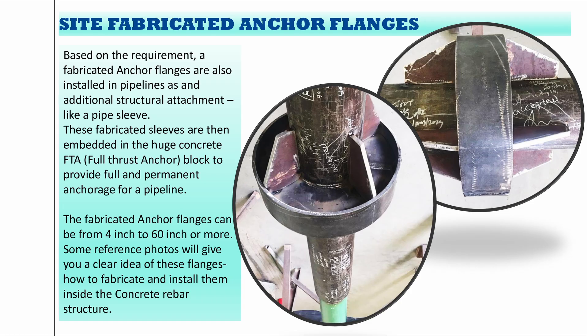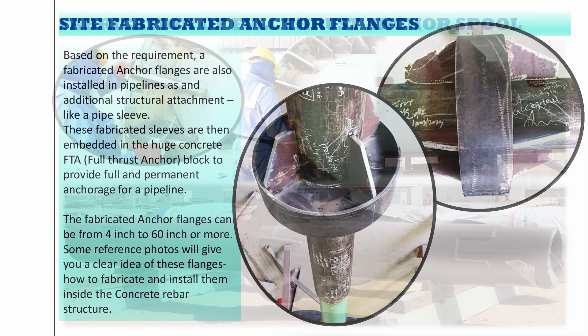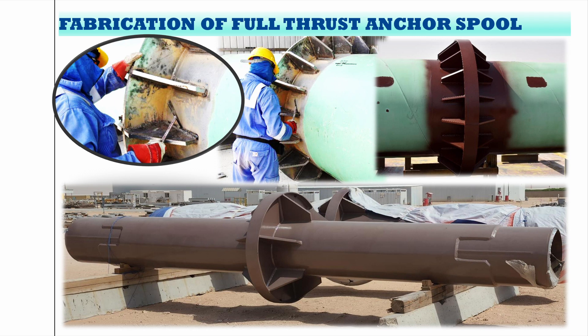In Gulf oil and gas projects, fabricated anchor flanges are generally used — you can see the photo on the right. Based on requirements, fabricated anchor flanges are installed in pipelines with first a sleeve, then some anchors with structural welding on it. These fabricated sleeves are then embedded in a huge concrete full thrust anchor block to provide full and permanent anchorage of the pipeline. Fabricated anchor flanges can range from 4 inch to 16 inch, and any custom size if required. You can see fabrication photos — welding is ongoing, cleaning is ongoing, and coating of the flange is also ongoing. Most of the larger anchors are poured at site.